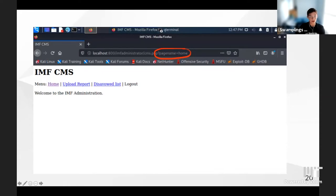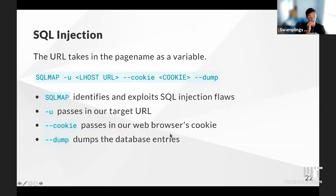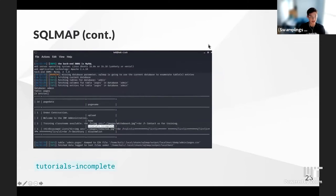Once we bypassed the login, we were greeted with our third flag, which directed us to the IMF CMS page. This page had three subpages: home, upload, report, and a list. We navigated to all three and noticed for all three pages the page name was being passed in as a variable input in the URL. After a couple of tests, we determined the page was vulnerable to SQL injection. We used SQL map, which helps identify and exploit SQL injection flaws. Passing in the URL and cookies, we found a SQL table containing a link ending in 'tutorials-incomplete.'